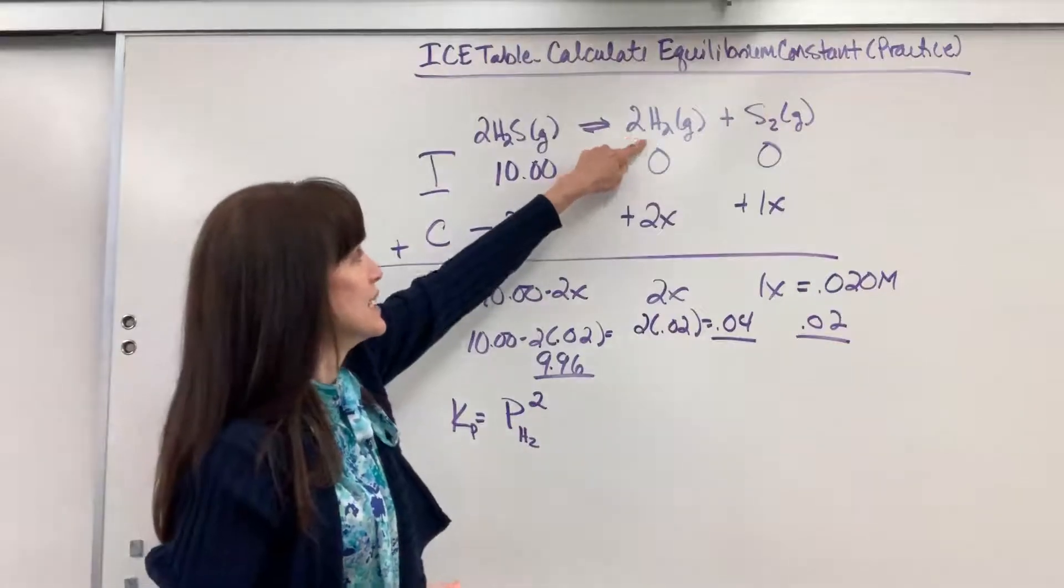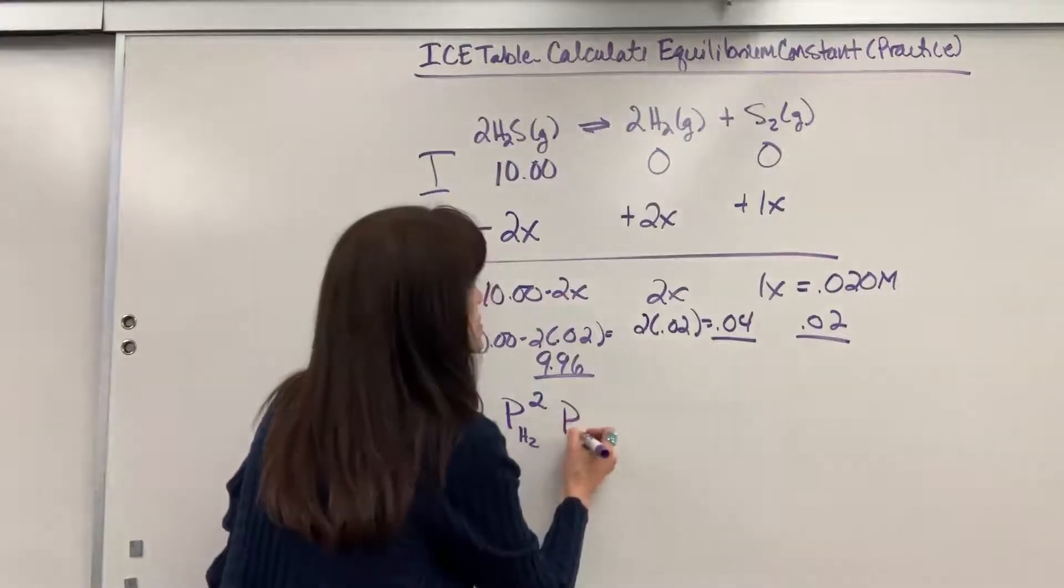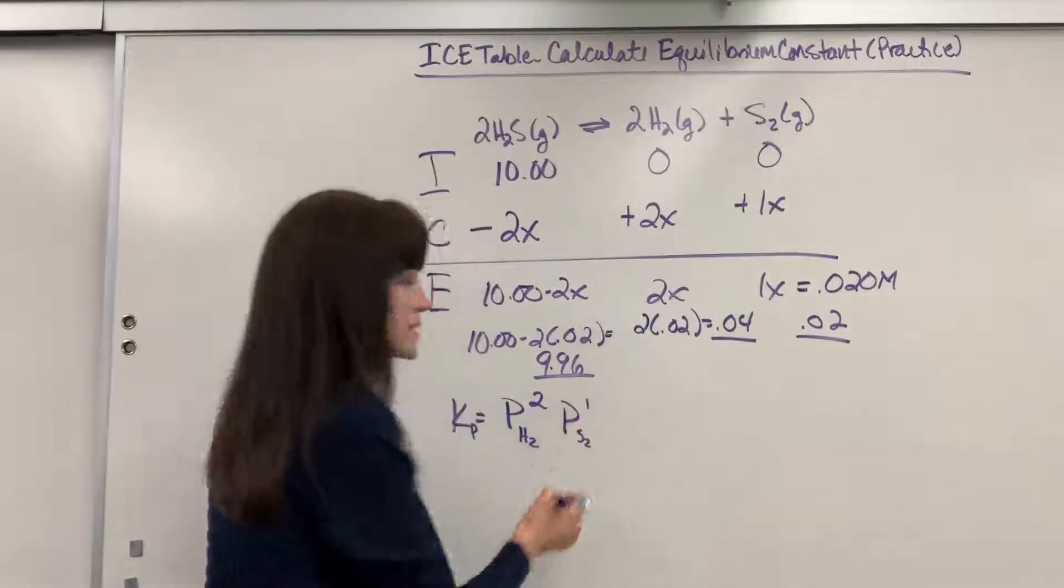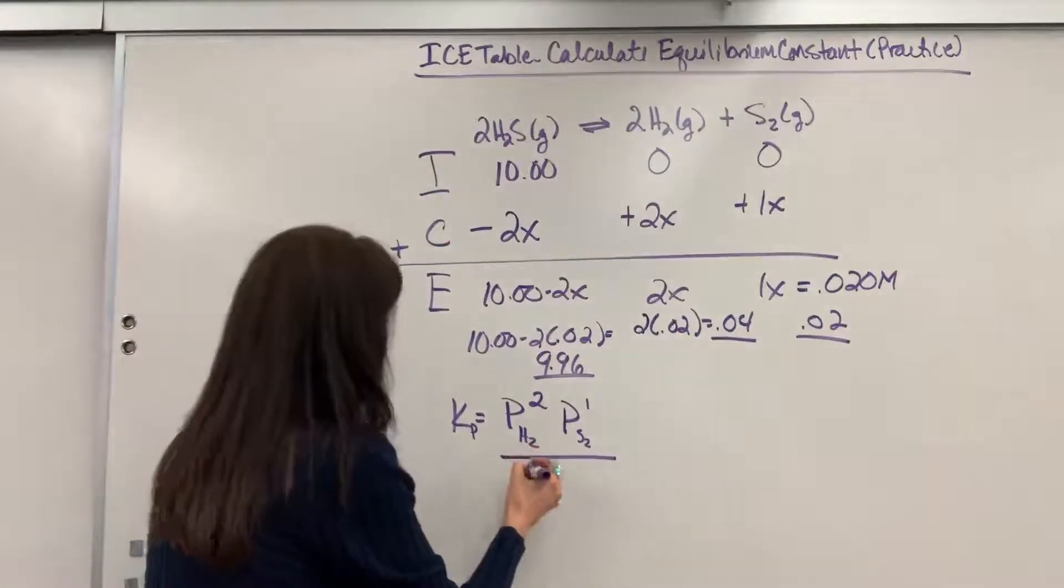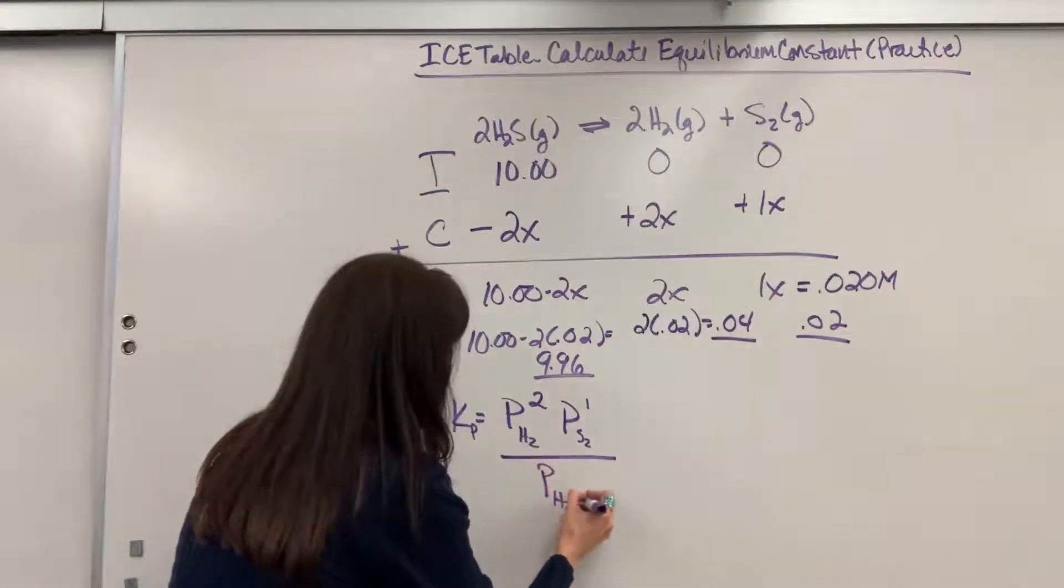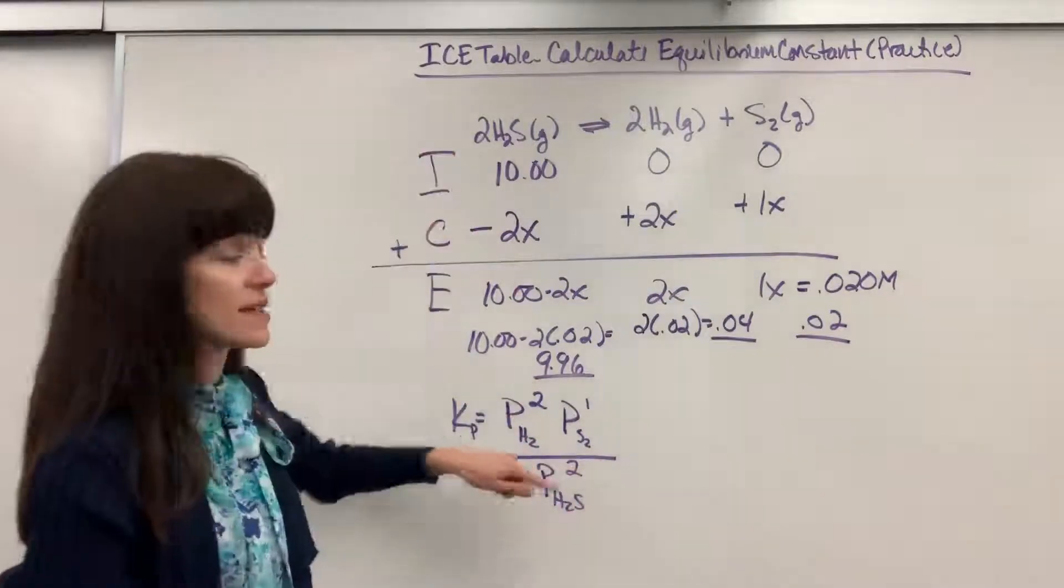Just be really careful on that, that you don't forget. Take that coefficient, it becomes the exponent, times the partial pressure of sulfur gas. That's understood to be a 1, divided by the partial pressure of the hydrogen sulfide, and that's also squared because of that 2.